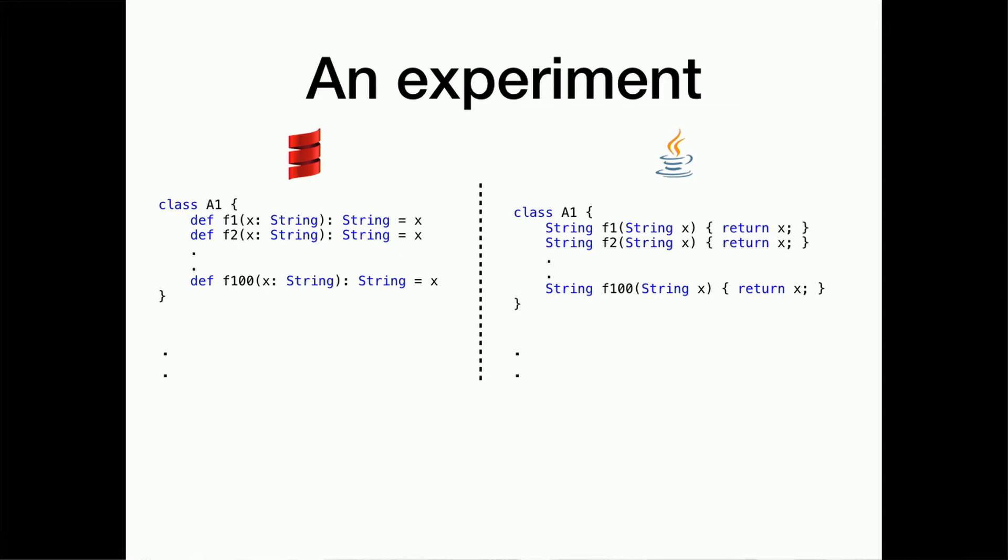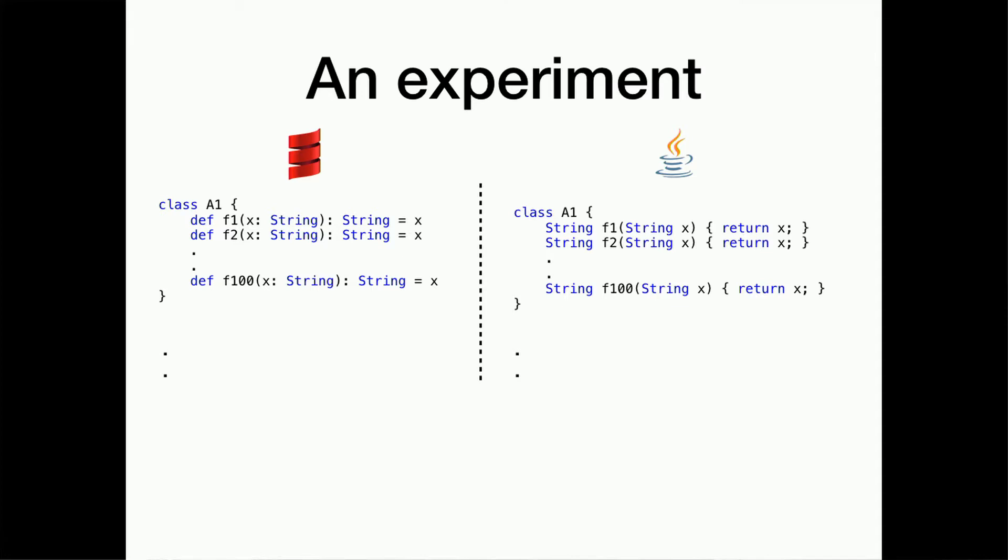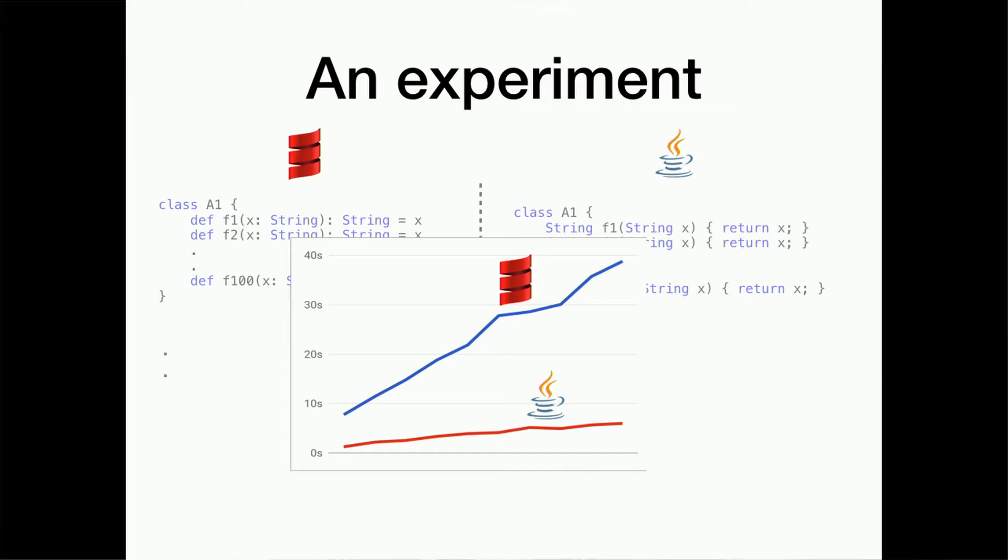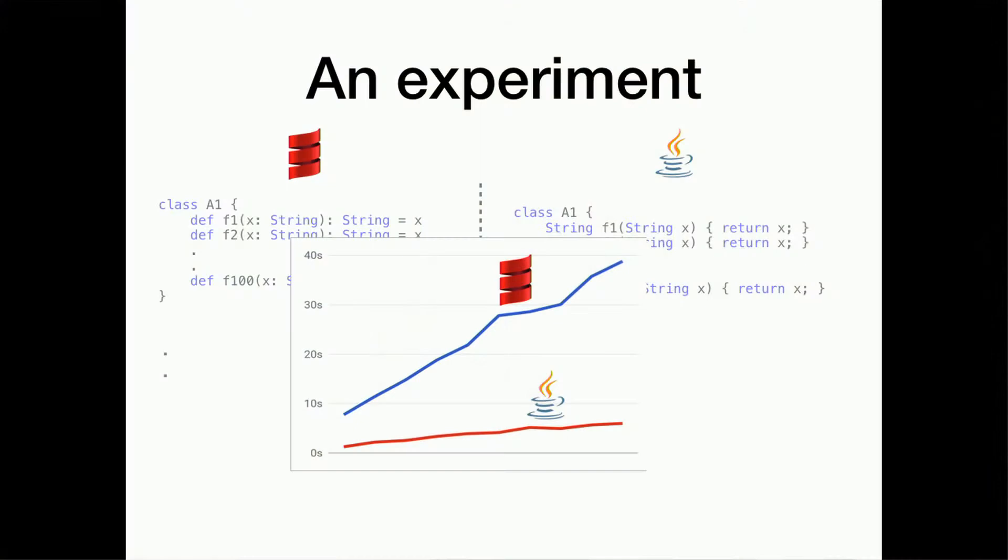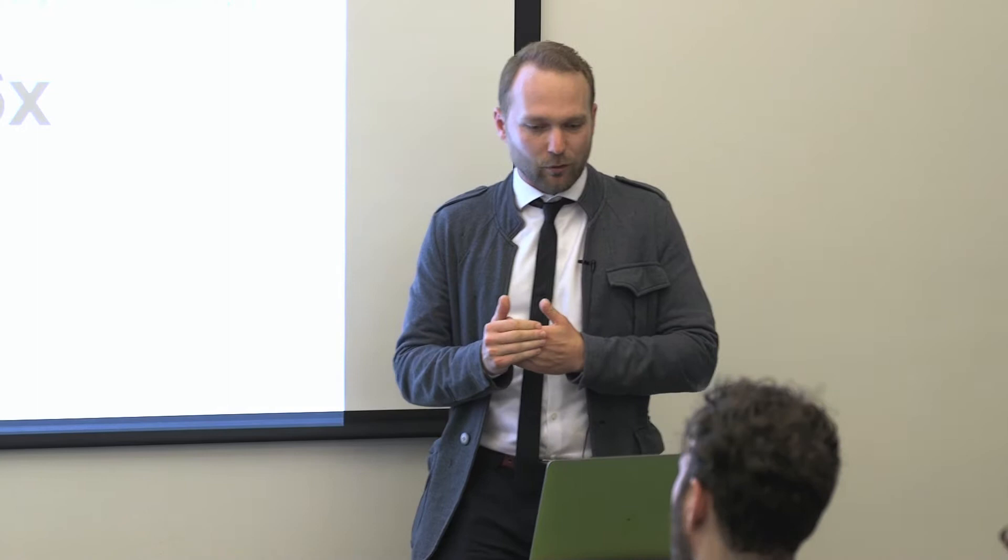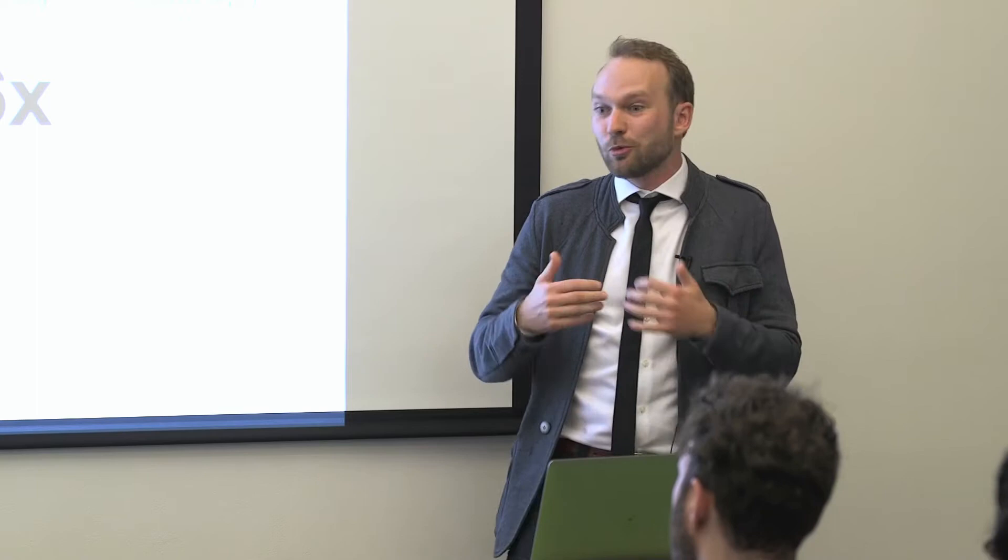I ran an experiment. I generated simple Scala and Java code side by side. I stayed away from Scala's rich type system features that are normally attributed as a source of slow compilation time. So I compile both and compare the execution times. On the chart, you see a wide gap between the two compilers. Scala compiler is six times slower than Java one. Whatever Scala compiler is doing, it's a waste.